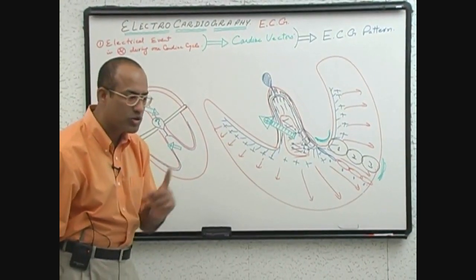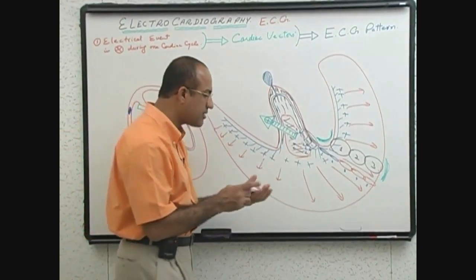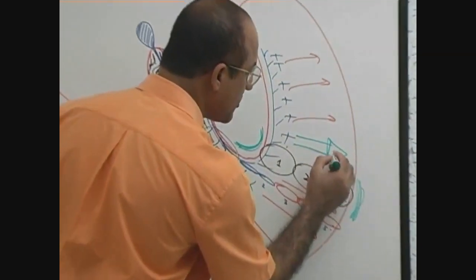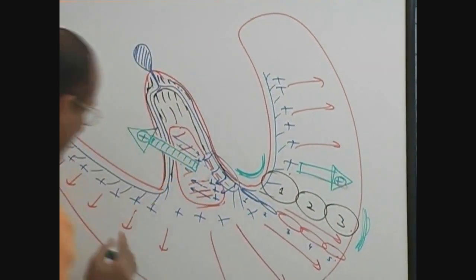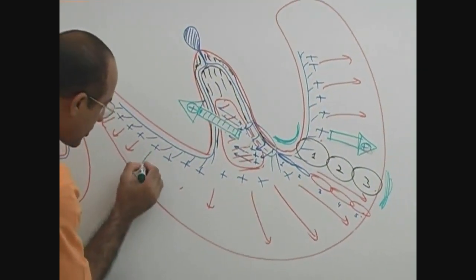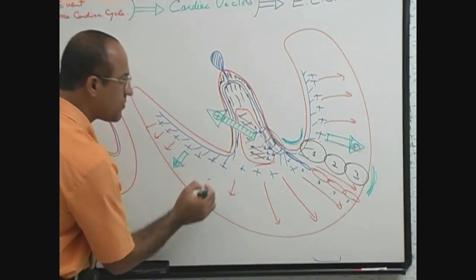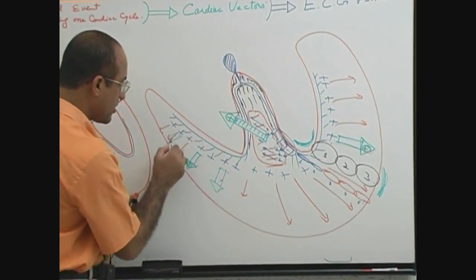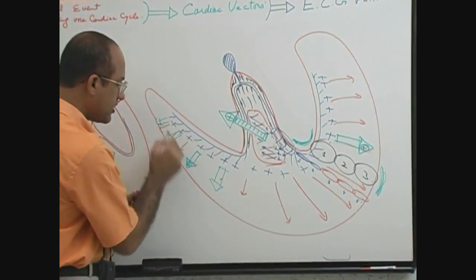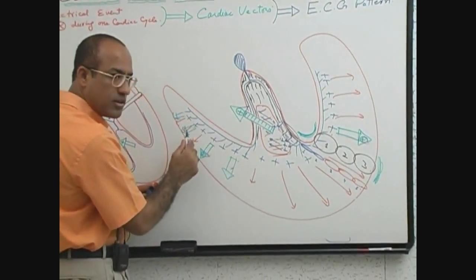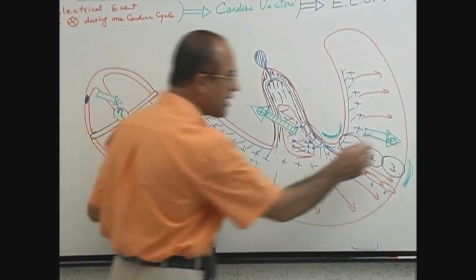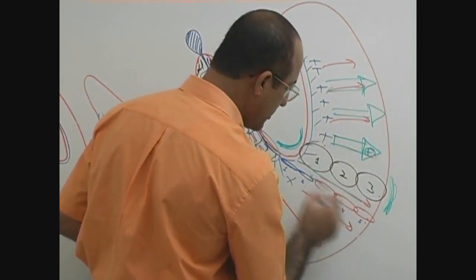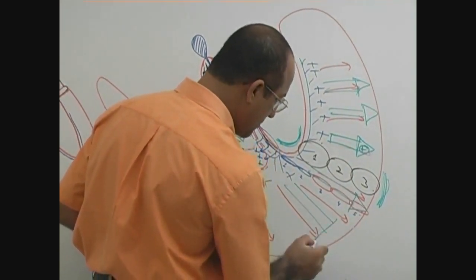Because the left ventricle is thick, its depolarizing vector is stronger. Because the right ventricle is thin, its vector is smaller. And there is not just one vector — many, many vectors are produced. These vectors represent depolarization of the right ventricle, and these represent depolarization of the left ventricle.